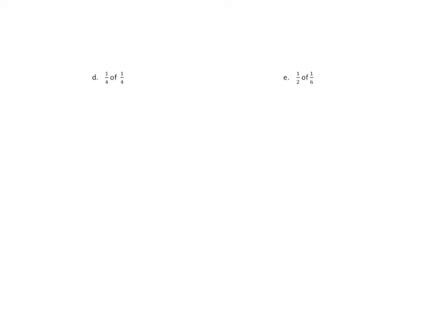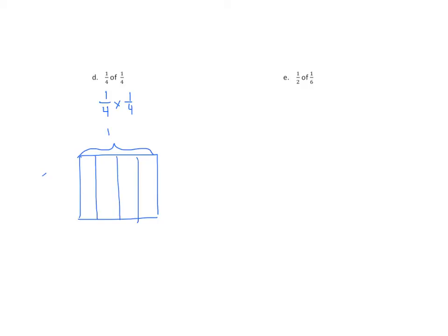No longer a word problem — simply representations. When we have one-fourth of one-fourth, we are talking about the multiplication problem one-fourth times one-fourth. We'll start with our second factor, making our rectangular model, bracketing the whole. We divide this into four equal parts, shade one-fourth, bracket and label it one-fourth. We want one-fourth of one-fourth, so I'm going to make horizontal lines, partitioning my rectangle into four equal parts.